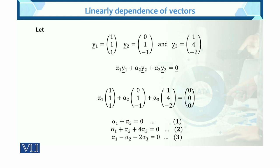Here is the example. We have the hypothetical example. So y1, y2, and y3 are vectors in three dimensions. We write: alpha 1·y1 + alpha 2·y2 + alpha 3·y3 = 0. Now put the values of y1, y2, y3 into this equation and set it equal to 0.